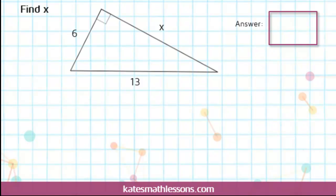In this problem we've been asked to find the missing side of a right triangle. Any time you have a right triangle and you need to find one of the sides, you can use the Pythagorean Theorem. The Pythagorean Theorem says that A squared plus B squared equals C squared. It applies only for right triangles.